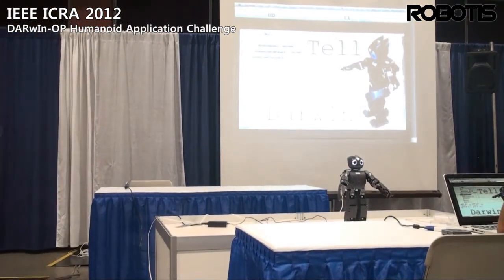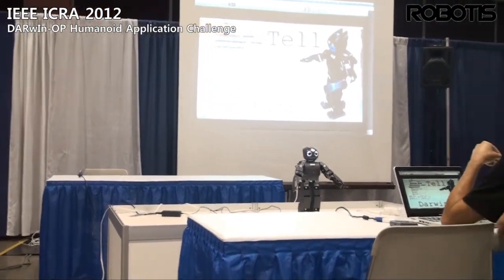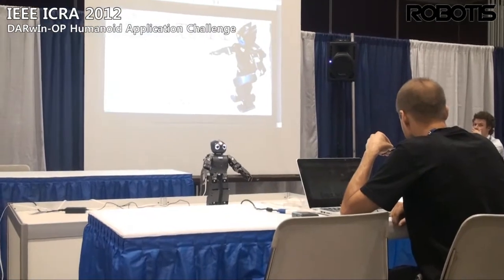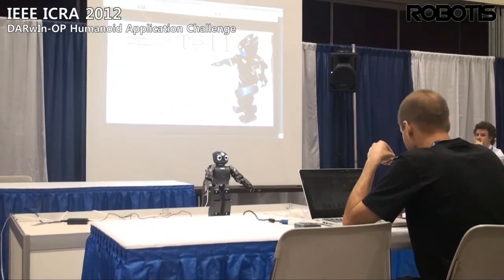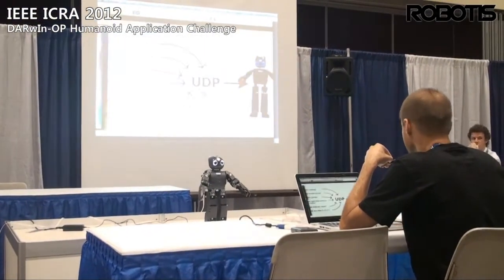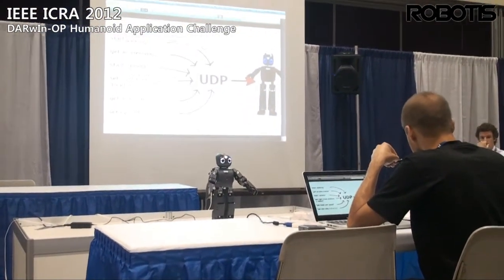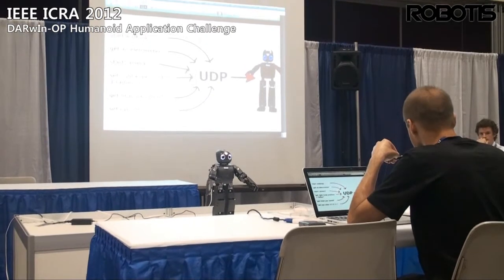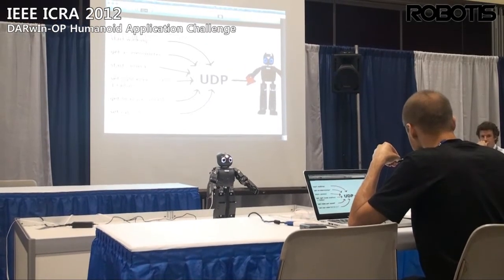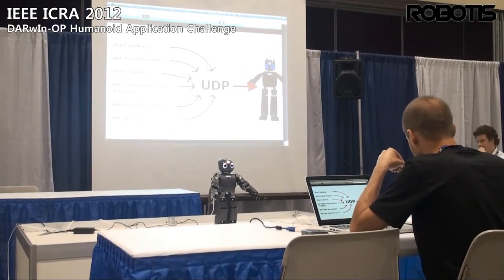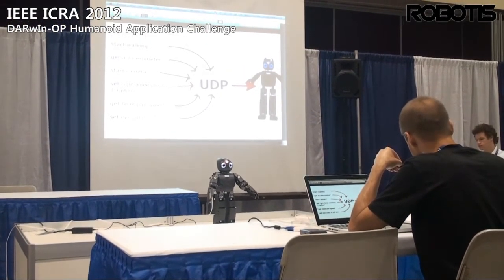Tell Darwin is a command interpreter for the Darwin-OP Robot. It allows users to send simple, intuitive, human-readable commands to the robot wirelessly over UDP, and it carries out those commands as you would expect.